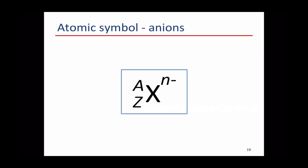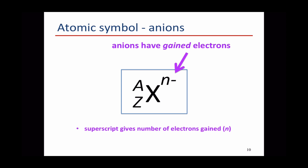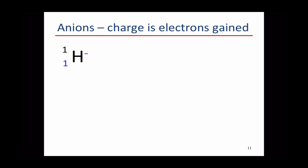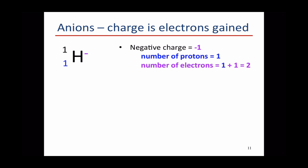Atoms can also gain electrons to form anions. Now they have more electrons than protons and have a negative charge. We show this with a negative sign on the right-hand side of the atomic symbol, and the number indicates how many electrons have been gained. So H- has gained an electron and has a negative charge of minus 1. A neutral hydrogen atom has 1 proton and 1 electron, but this H- has gained an electron, so it now has 1 plus 1 — 2 electrons.